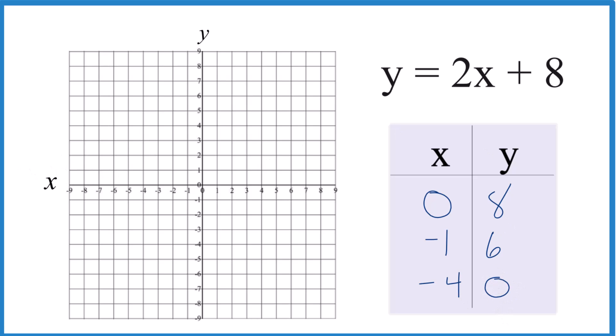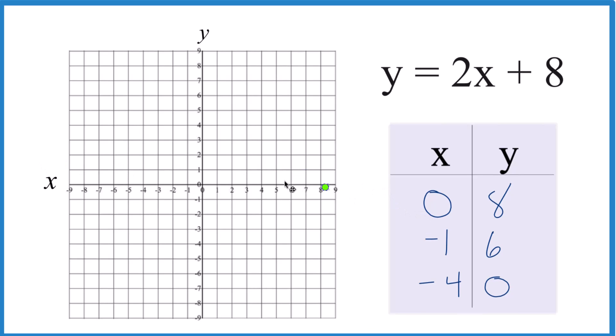All right, let's graph them. So we'll go to x is 0, y is 8, right up here. Then we have x is negative 1, and y is 6, right there.